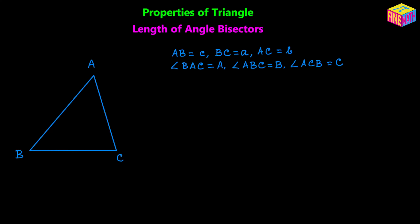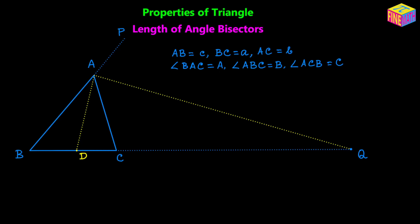Let's now draw one of the interior angle bisectors. Let's suppose AD is the interior angle bisector — it bisects angle A near vertex A. Let's also extend side BA and side BC, then draw the bisector of the exterior angle CAP. In this video we are going to calculate the length of AD and AQ: AD is the interior angle bisector and AQ is the exterior angle bisector. Once we calculate each one, we can use a similar technique for the other bisectors.